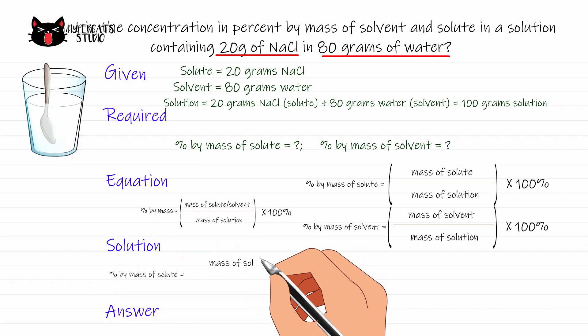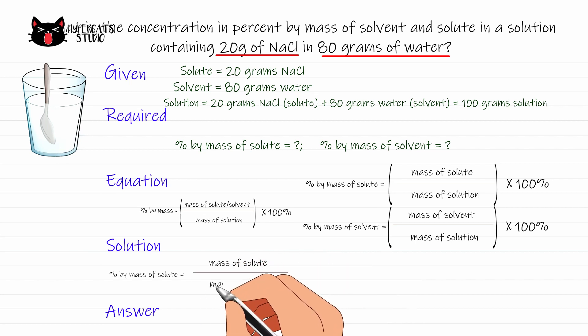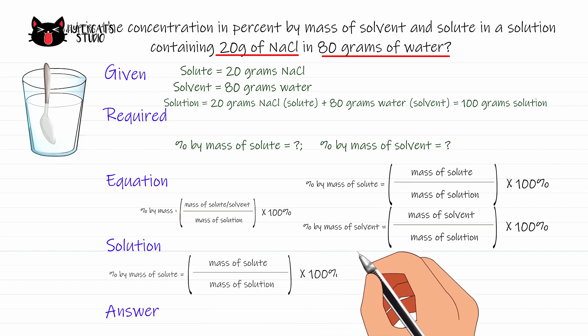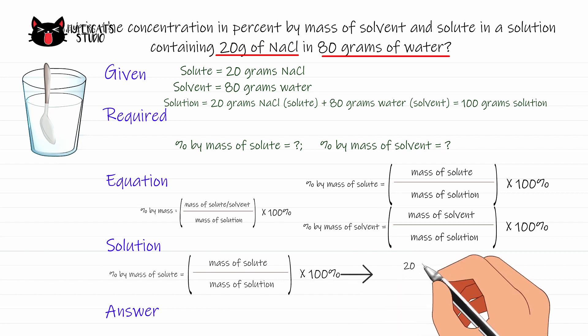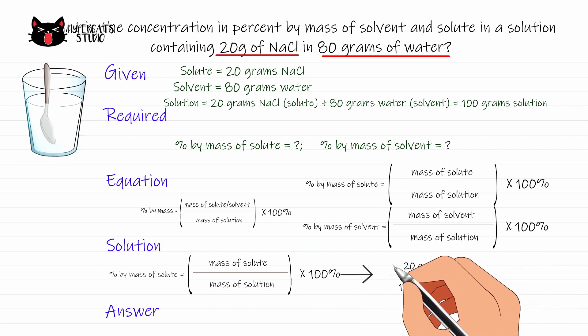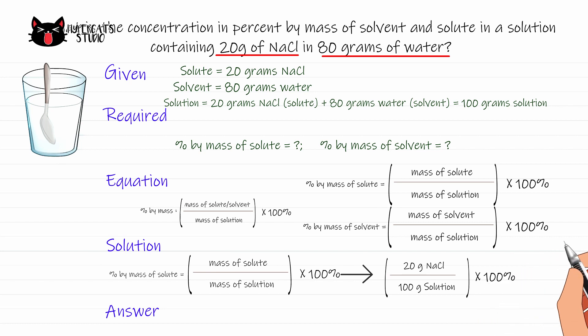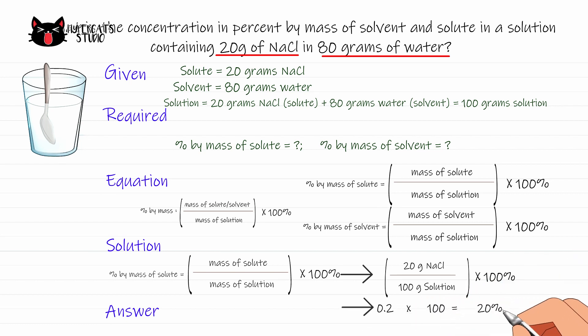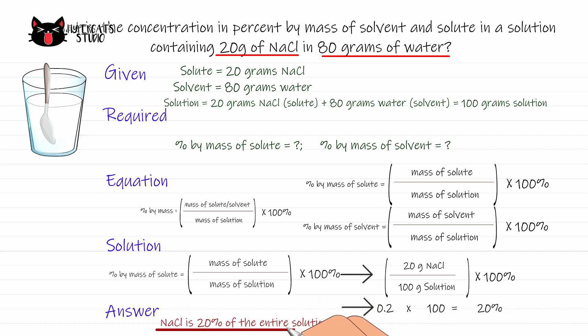Our solution: percent by mass of solute equals mass of solute divided by mass of solution, times 100. Substituting the given values: 20 grams of sodium chloride divided by 100 grams of solution equals 0.2. Then 0.2 times 100 equals 20%. Therefore, sodium chloride is 20% of the entire solution.